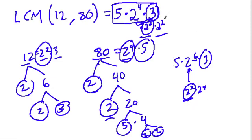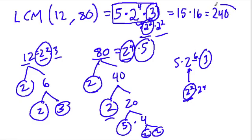So my least common multiple is 5 times 3, which is 15, times 2 to the 4th, which is 16. For the numbers 12 and 80, the least common multiple is 15 times 16, which is 240. I hope this helped — thank you.